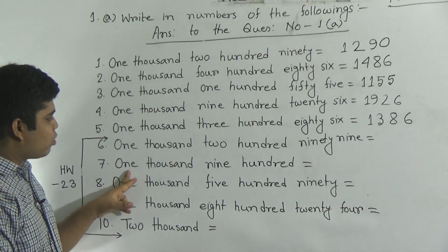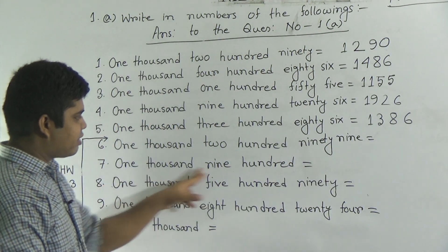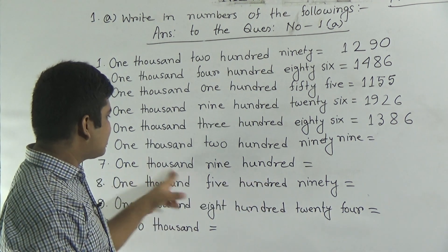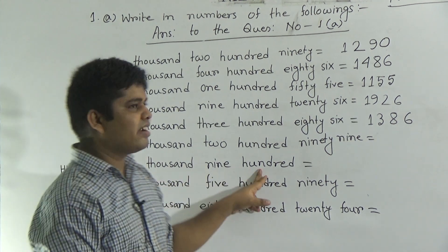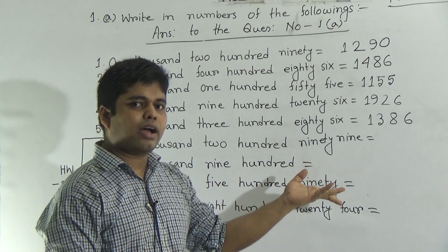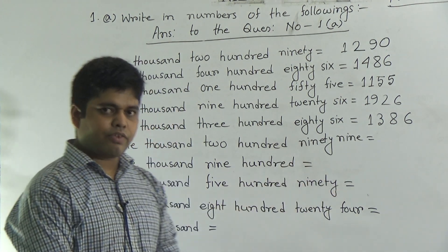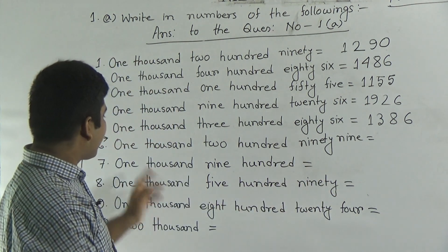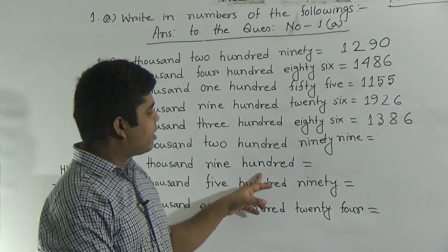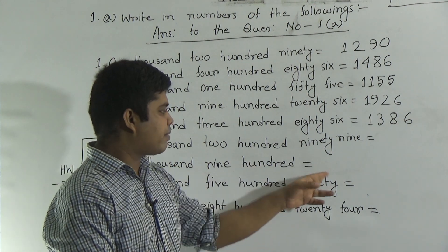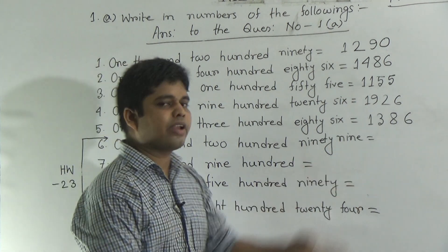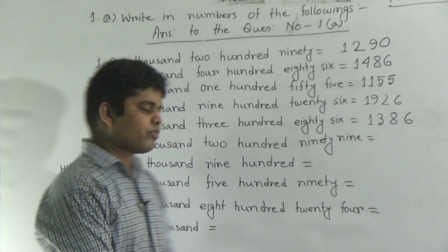Next, question number 7: 1900. Dear students, notice — here it is 1900 only. So here the 10's place and 1's place is absent. For this reason, you write 1000 for 1, and 900 means 9. After that, 2 places are absent, so here we write 00.